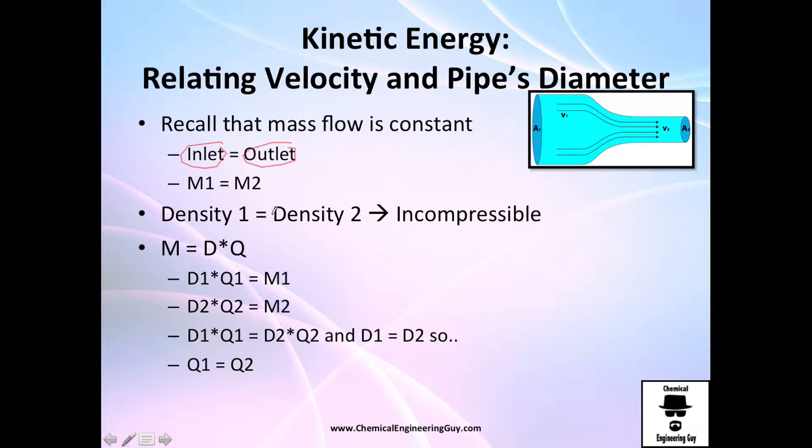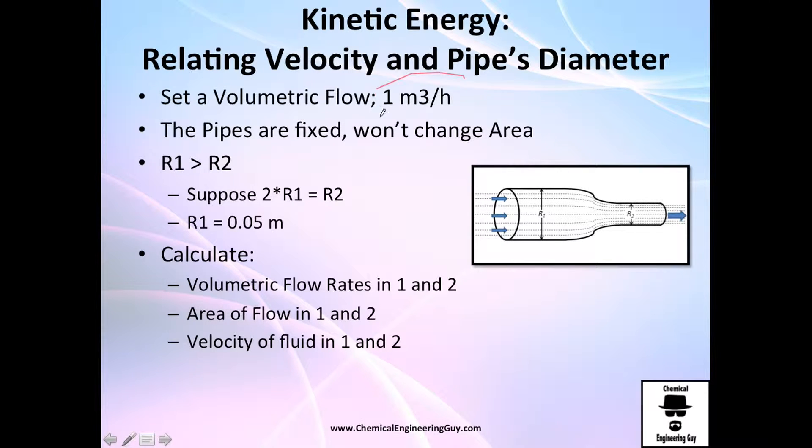Since the density in 0.1 and 0.2 is equal because this is incompressible flow, we can assume then that density times Q will give me mass 1 and mass 2. I have densities times volumetric flow rates Q1 and Q2. And I know density 1 and density 2 is equal. So cancelling density 1 and density 2, I show you that the volumetric flow rate in 0.1 is the same as volumetric flow rate in 0.2.